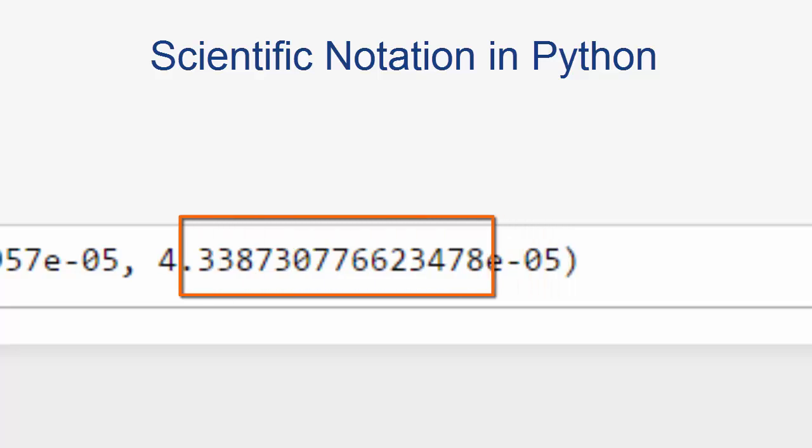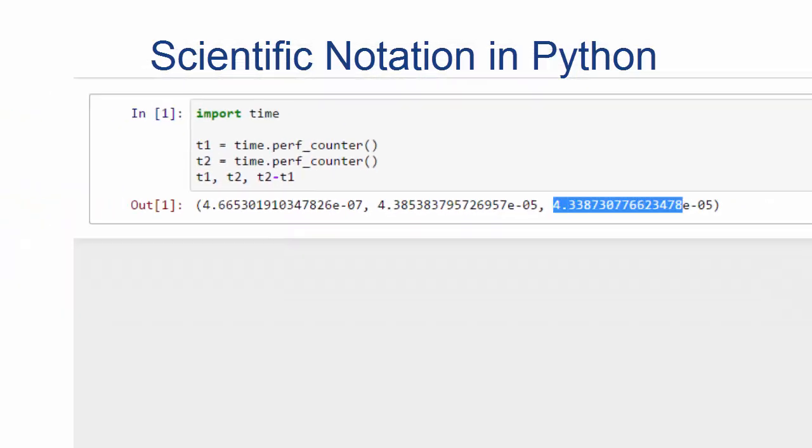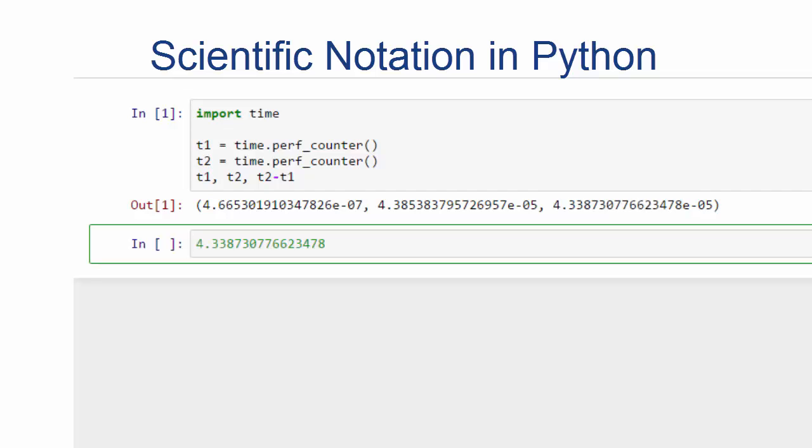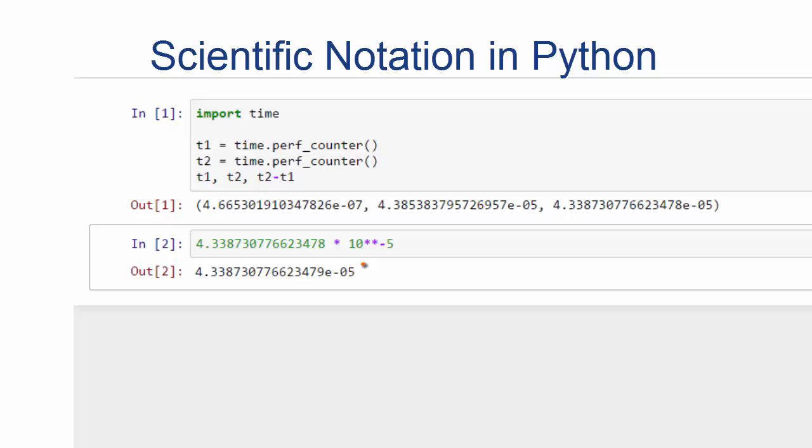What that means is that we're taking 4.338730776623478, and we're multiplying it times 10 to the negative fifth power. So let's do that. We have this number, and we're multiplying it times 10 to the negative fifth. And you can see that gives us the same number.